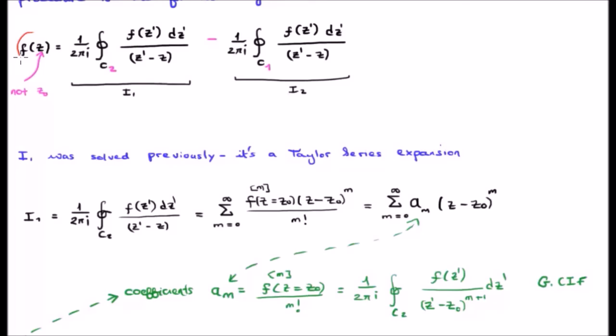So we have f of z, not f of z zero, just like we did with the Taylor series. Now we're going to subtract from the integral involving the contour two, the integral involving contour one. Note by the way, this is integral one, this is integral two. So just be careful of the indices.